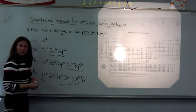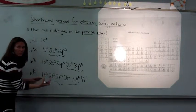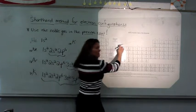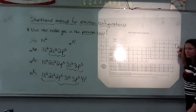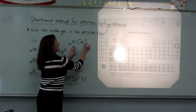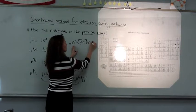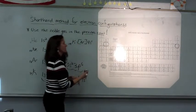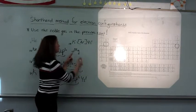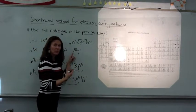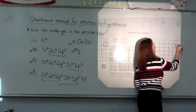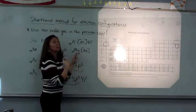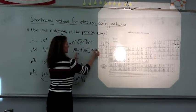In order to shorthand the electron configuration, we're going to take this configuration and just make it a little shorter. For potassium, we're going to use the noble gas that is in its previous row — so here's potassium, and the previous row noble gas is argon. So I'm saying argon's configuration plus an additional 4s1. For magnesium, right here, the atomic number is 12. I'm going to look at the noble gas previous to magnesium in the period it's in, and that would be neon. So magnesium's electron configuration is the same as neon's, plus an additional 3s2.